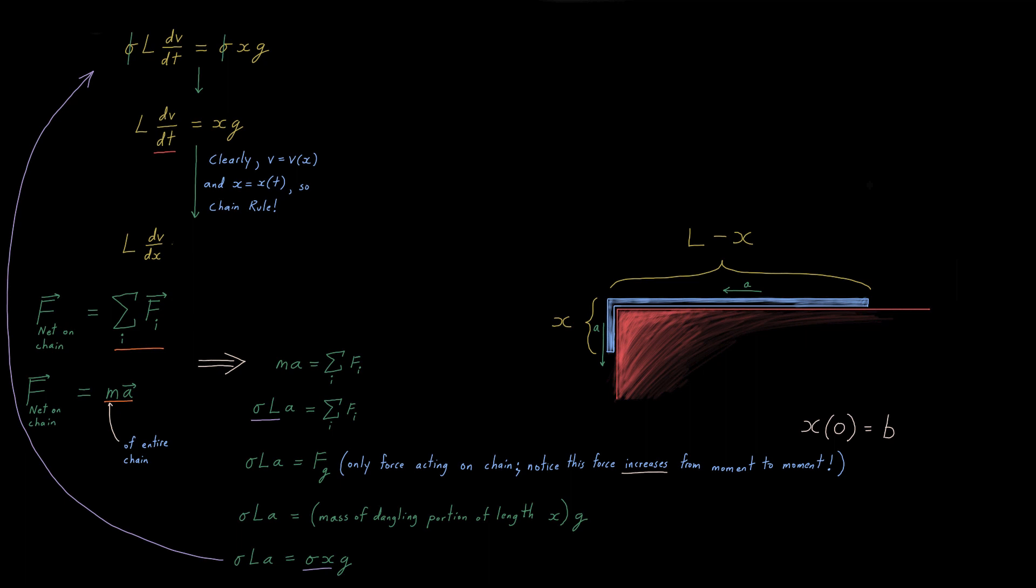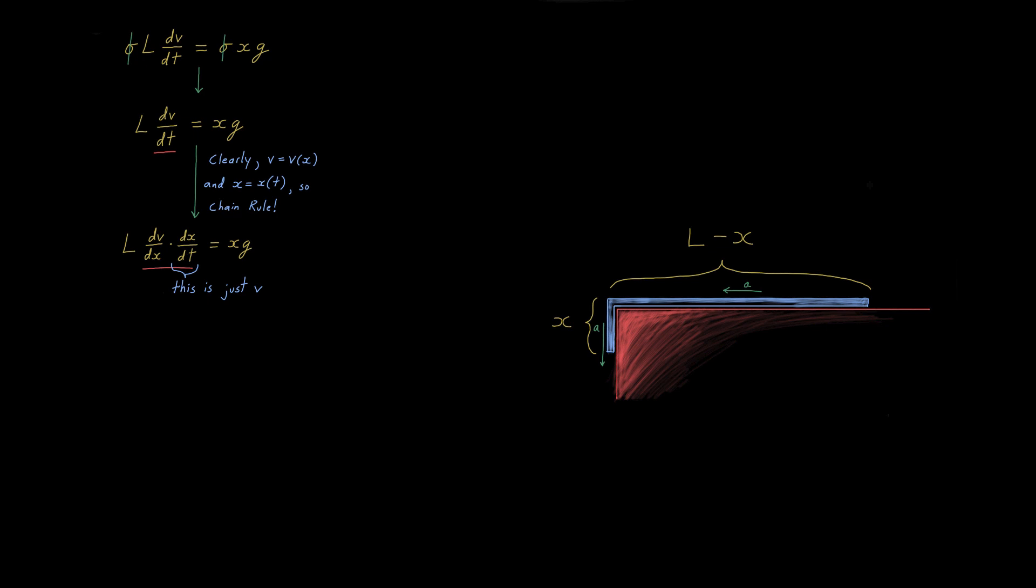dv/dt is dv/dx times dx/dt, and dx/dt, just like acceleration was dv/dt, is just v. Velocity is the derivative of position with respect to time.